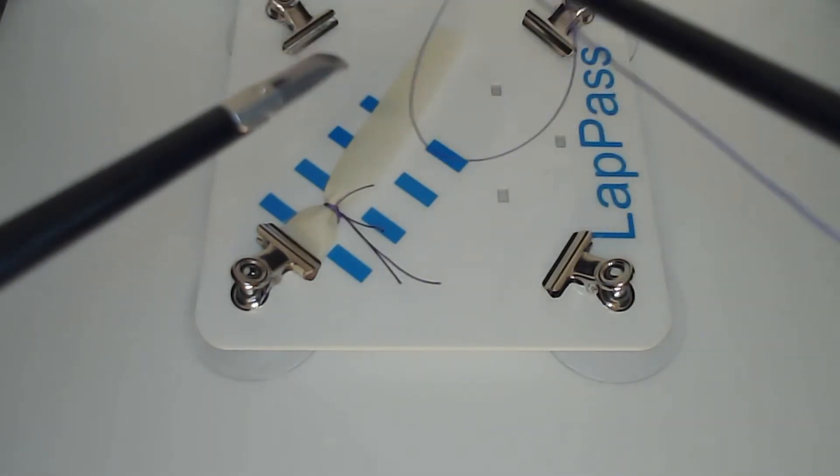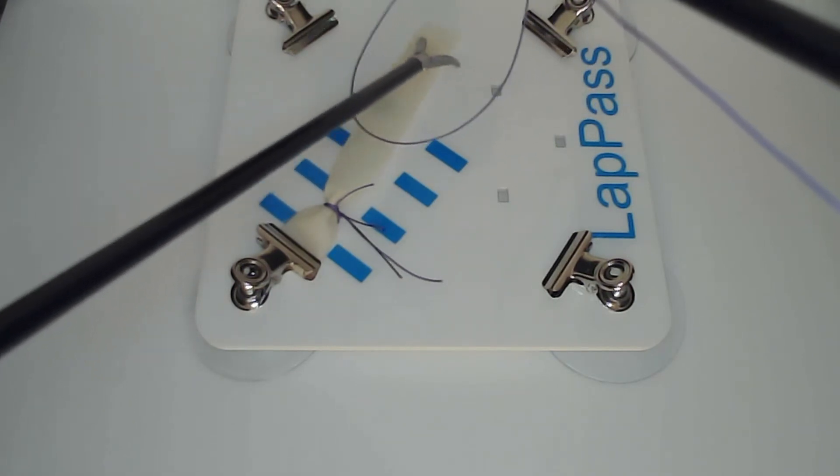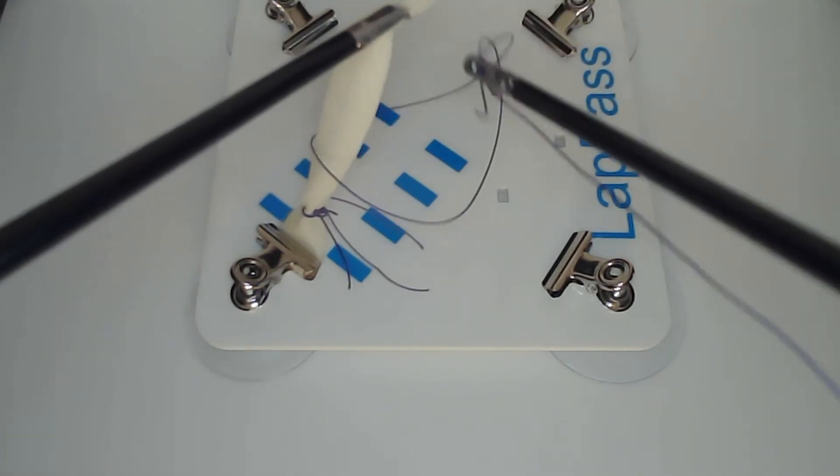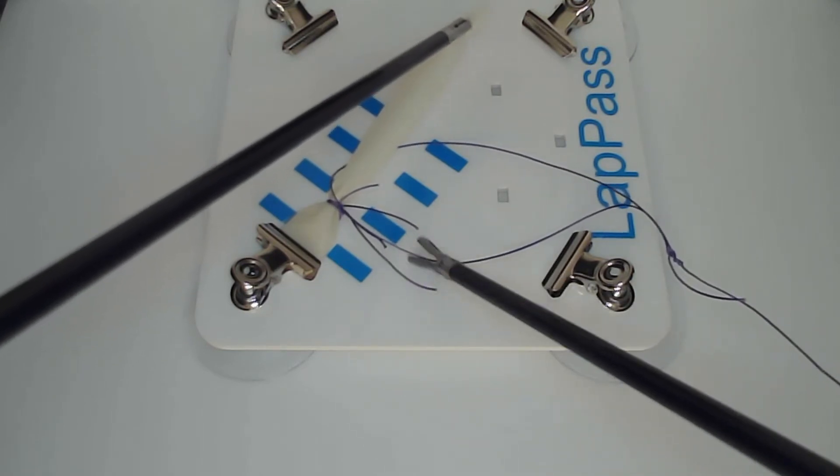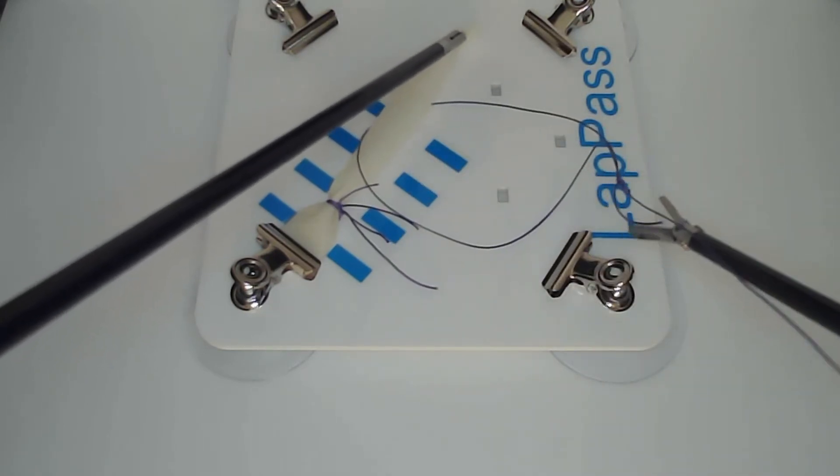It's important to use the instruments bilaterally. You can either use two Johans or, as demonstrated here, a Johan and a dissector.